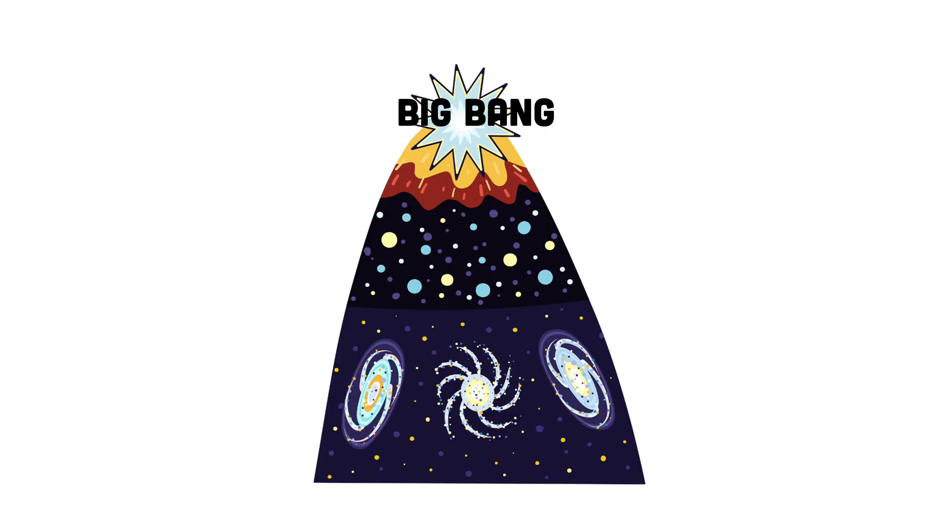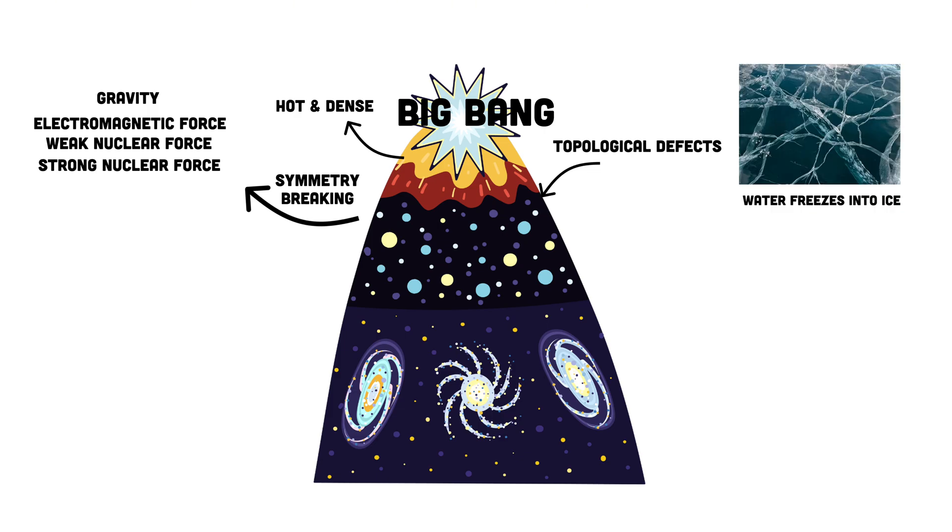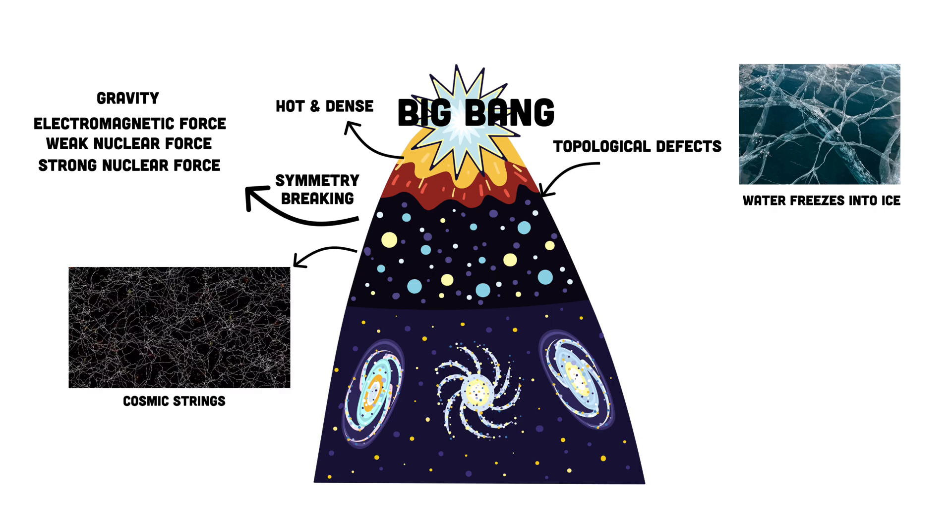In the first moments after the Big Bang, the universe was incredibly hot and dense with the fundamental forces of nature possibly unified as a single force. As the universe expanded and cooled, these forces separated in a process called symmetry breaking involving phase transitions in fields like the Higgs field that reshaped spacetime. However, these transitions didn't occur uniformly across space, creating regions of mismatch called topological defects similar to the cracks that form when water freezes into ice.